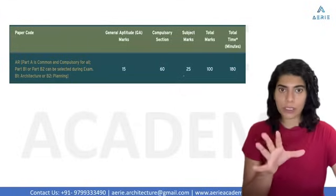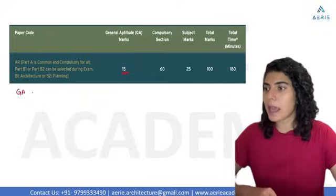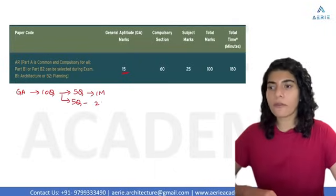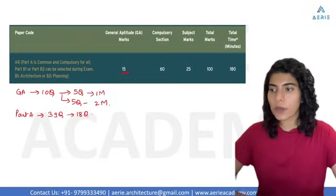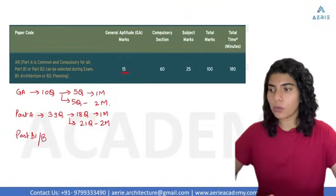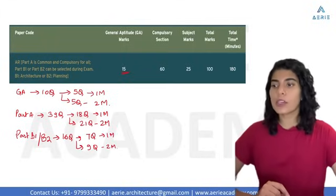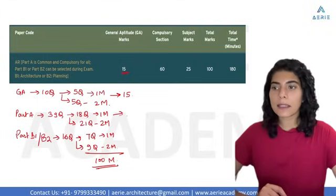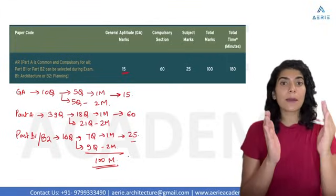Moving on to the exam pattern: there will be a total of 100 marks and 65 questions. General aptitude will be 15 marks — 10 questions, of which 5 are 1-mark and 5 are 2-mark. Part A (common, compulsory) will have 39 questions: 18 of 1 mark and 21 of 2 marks, totalling 60 marks. Part B1 or B2 will have 16 questions: 7 of 1 mark and 9 of 2 marks, totalling 25 marks. So general aptitude is 15 marks, Part A is 60 marks, and Part B1 or B2 is 25 marks — total 100 marks.